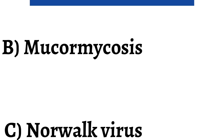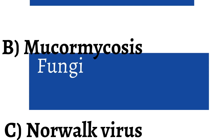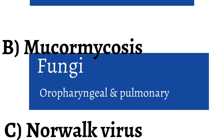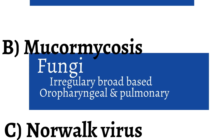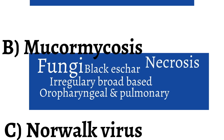Next, choice B — Mucormycosis is a type of fungus that tends to cause oropharyngeal and pulmonary infections in immunocompromised patients and diabetics. Mucor is described as an irregularly broad-based fungi with rare septations. The typical question stem will describe a diabetic with black-appearing sinus mucosa, or eschar, due to necrosis when mucor invades the tissue. The symptoms described in our question do not fit this picture, making it unlikely.